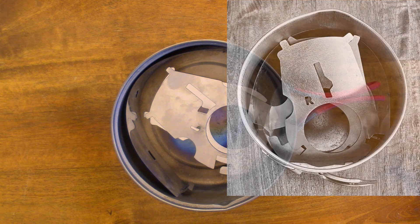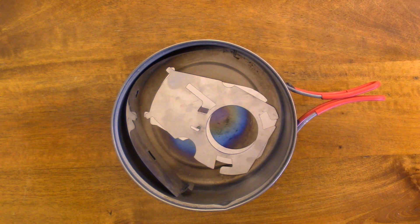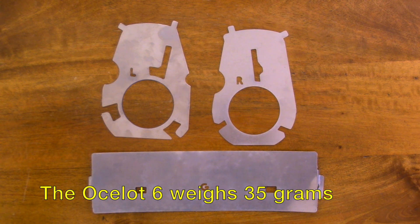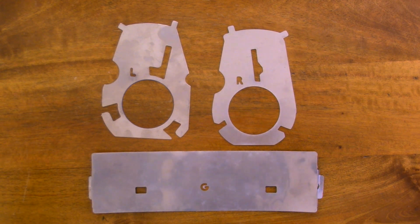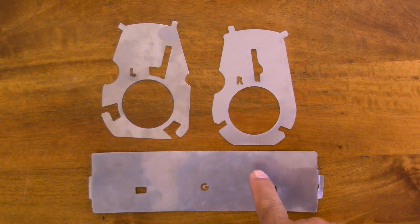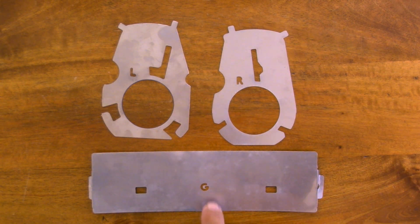So I'm going to show you what the components are and how to assemble it to the Pocket Rocket Stove. There are three components to this Ocelot 6. There's a burner plate which is marked left, right and the windscreen which has got a mark G on it.